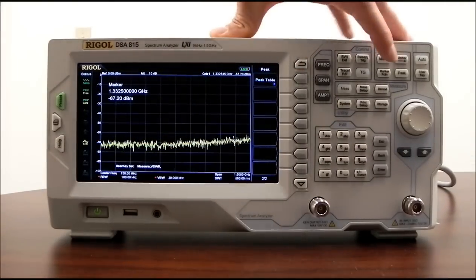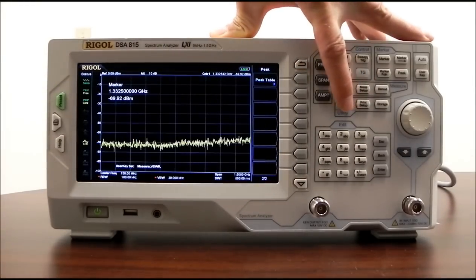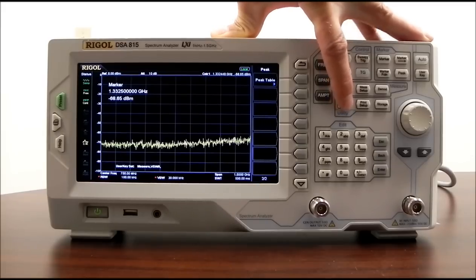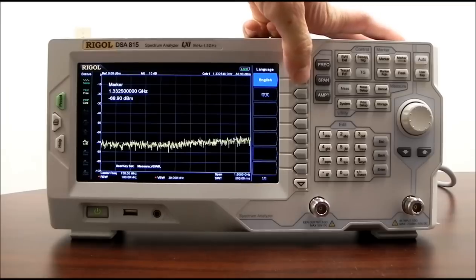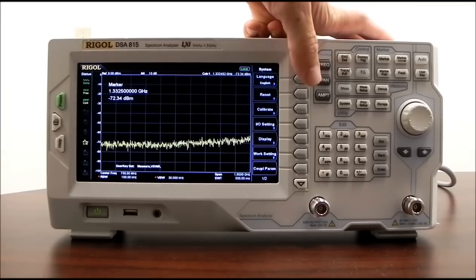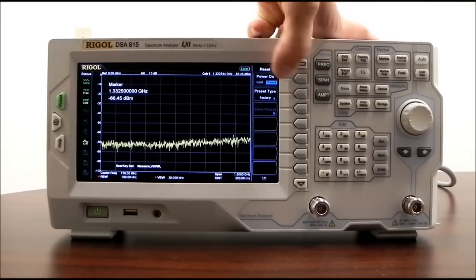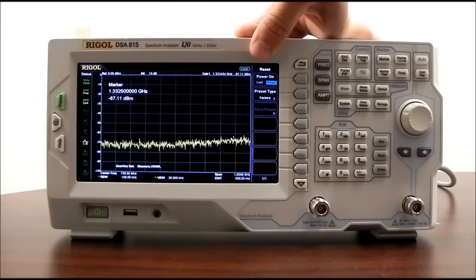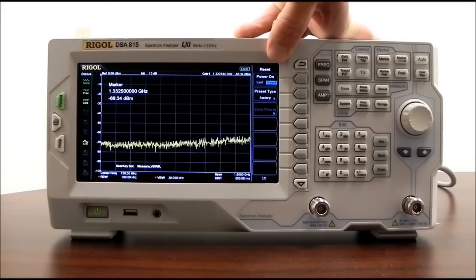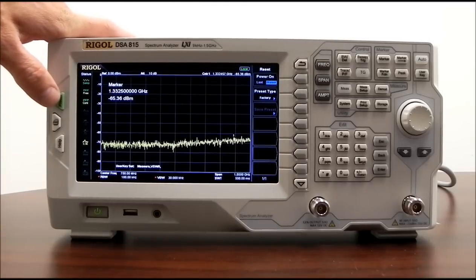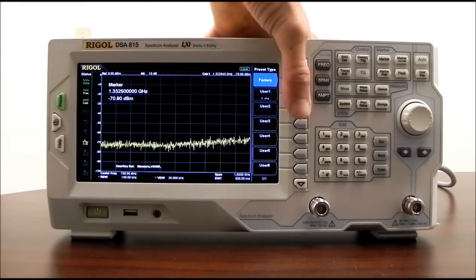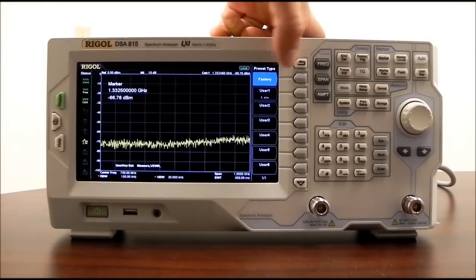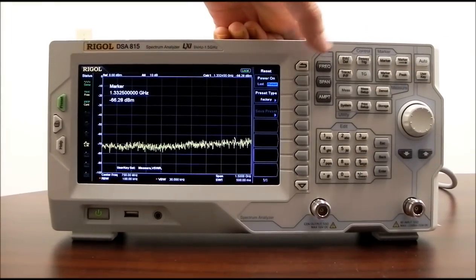Now let's take a look at some of the more standard functions that we can help configure the instrument. If we press the system key, you can see we can choose a number of languages available. We also have the ability to reset. We can actually power on either in the last user setting or we can do preset. Again, the preset key is over here. We can set the preset key to factory defaults or a number of user defined states for the instrument.